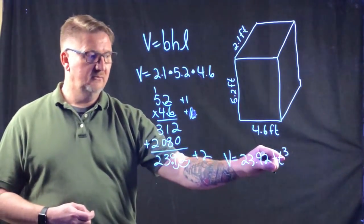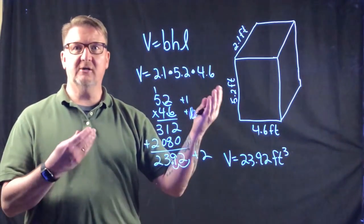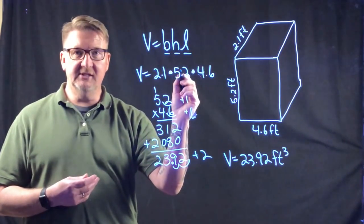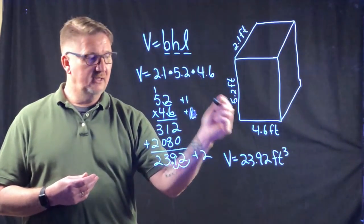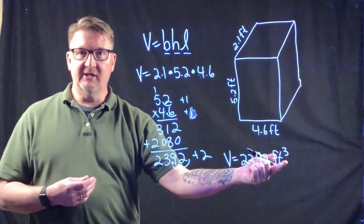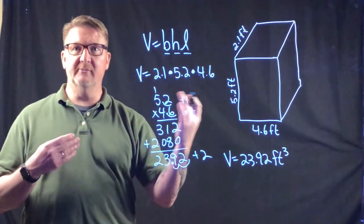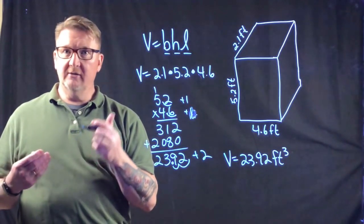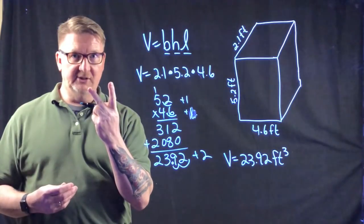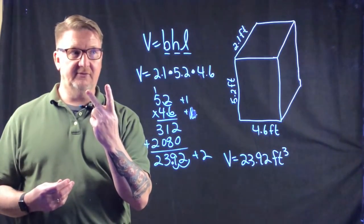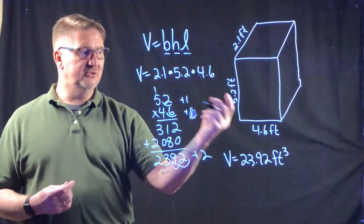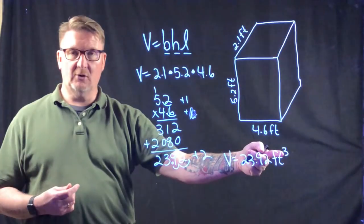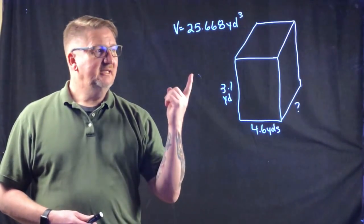We use feet cubed because we're talking about volume — we have three dimensions. When we did area it was squared, because that's only two dimensions: length and width. Now we've added a third dimension, which is why we use cubed.